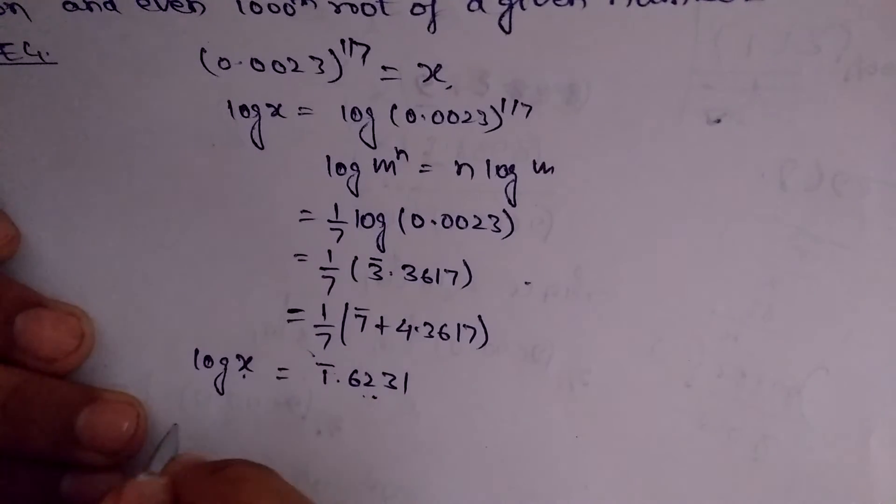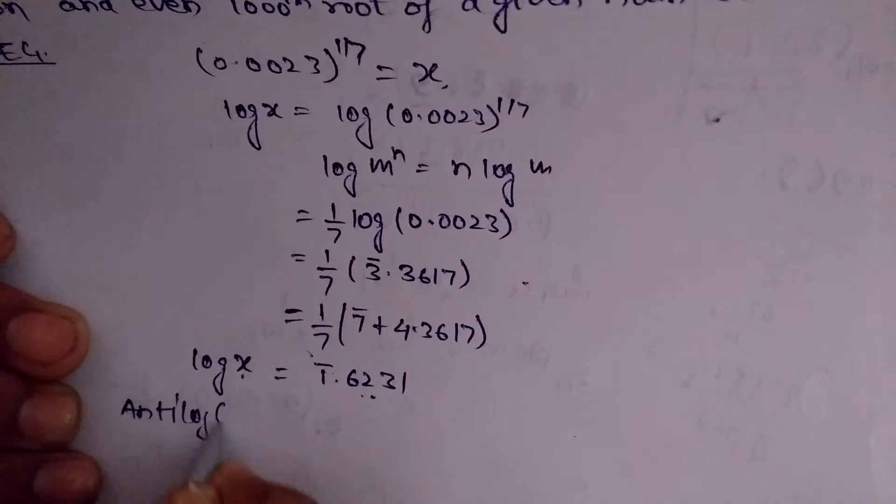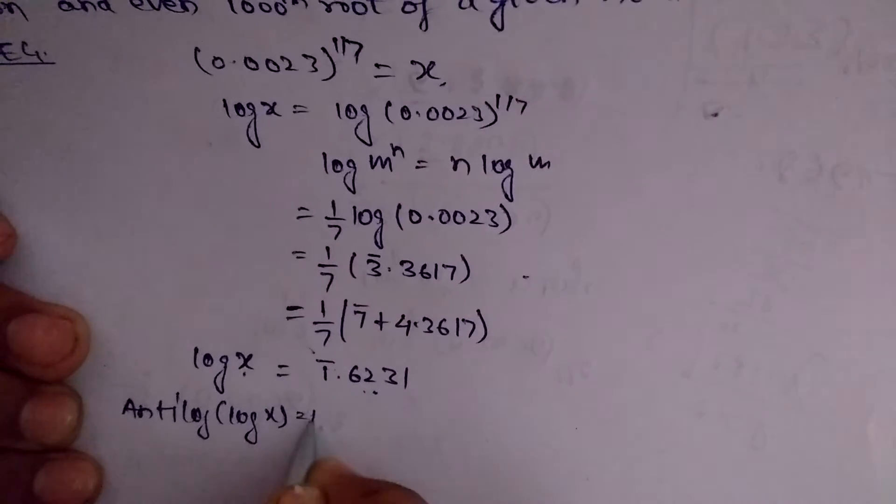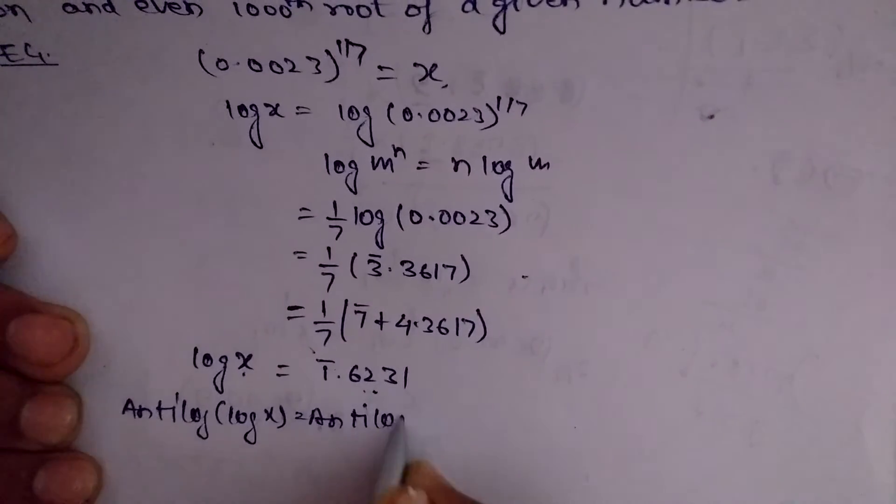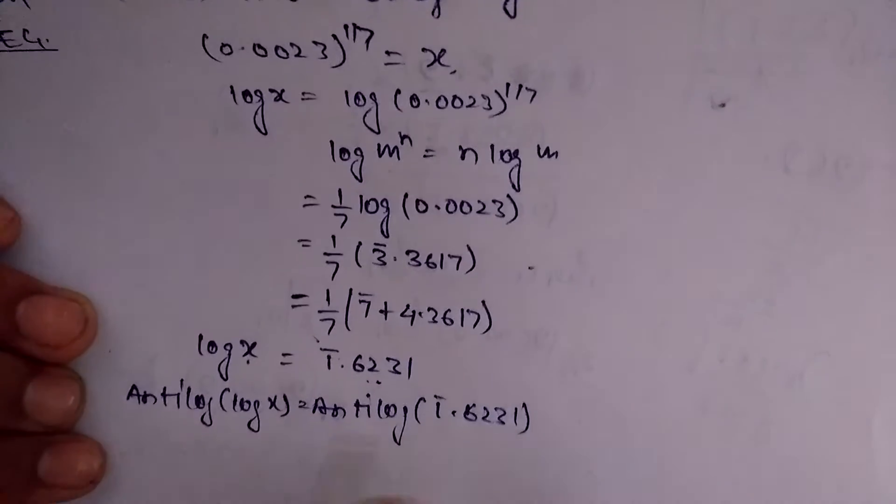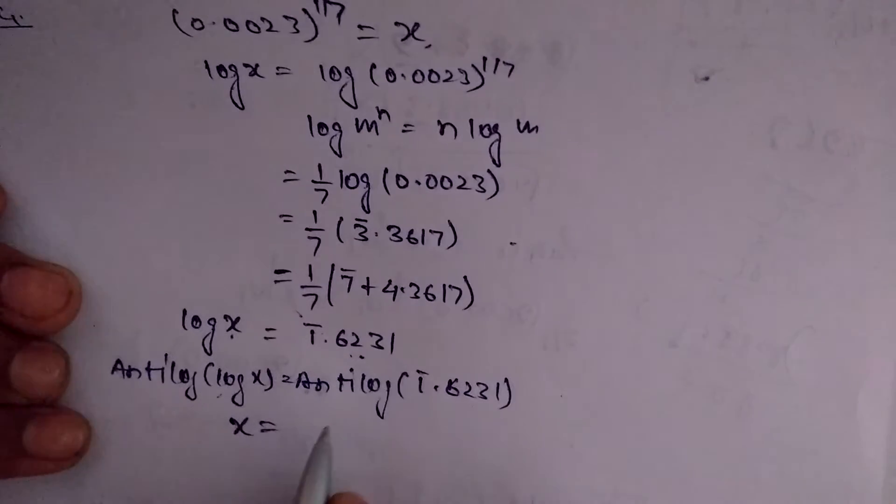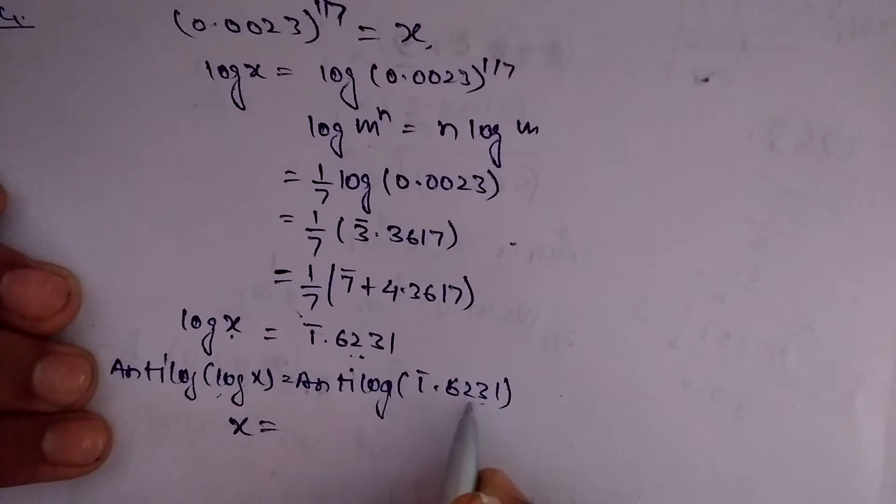Antilog of log x is equal to antilog of 1̄.6231. So this is x, as antilog and log cancel out. Antilog of this number, on using the antilog table, we will come to know as 0.4199.